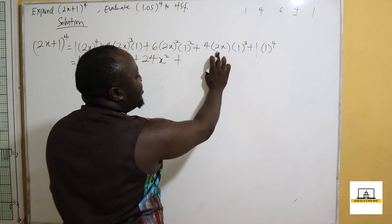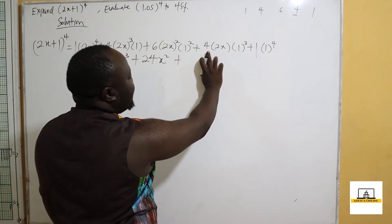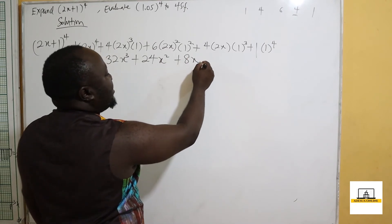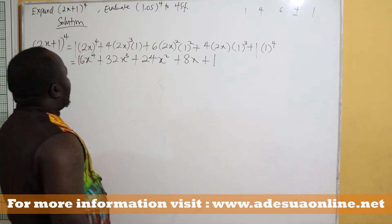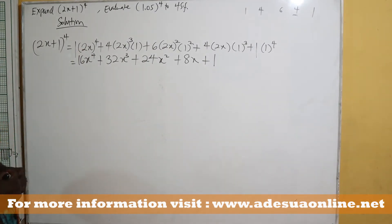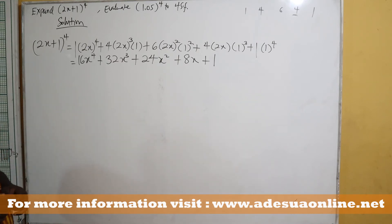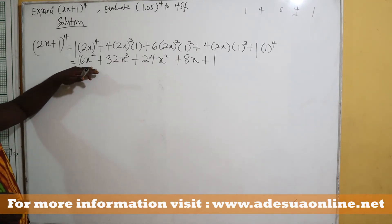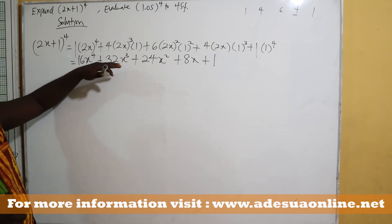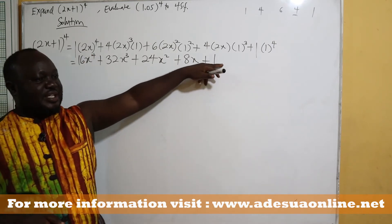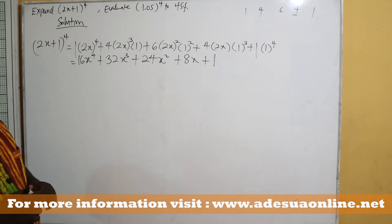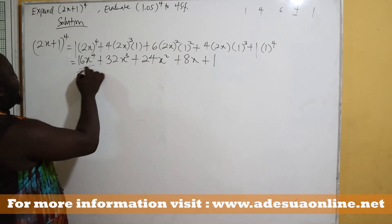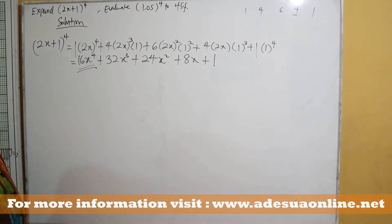Plus, 2 times coefficient 4 gives 8, so we have 8x. Plus 1^4 = 1. So the full expansion of (2x + 1)^4 is 16x^4 + 32x^3 + 24x^2 + 8x + 1, written in descending powers of x.